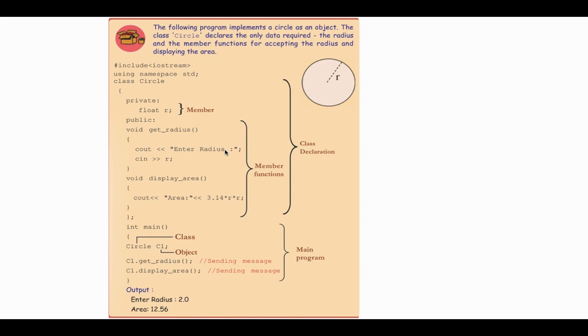Now we move on to the main function. In the main function, we create an object of the Circle class: circle c1. So the object c1 is created from the Circle class.